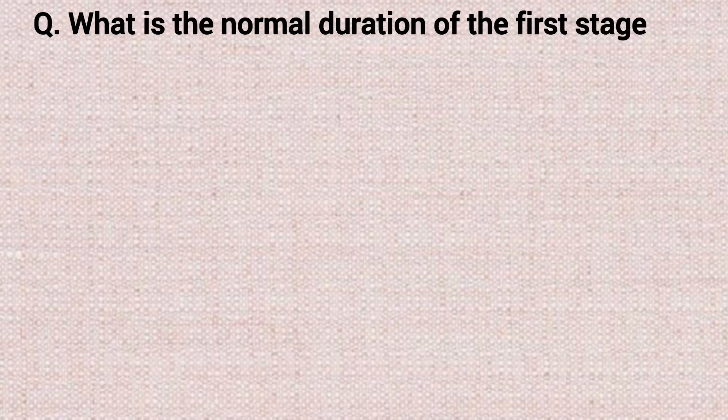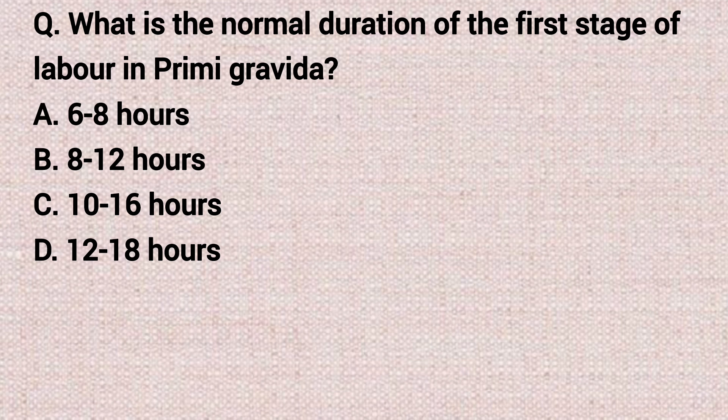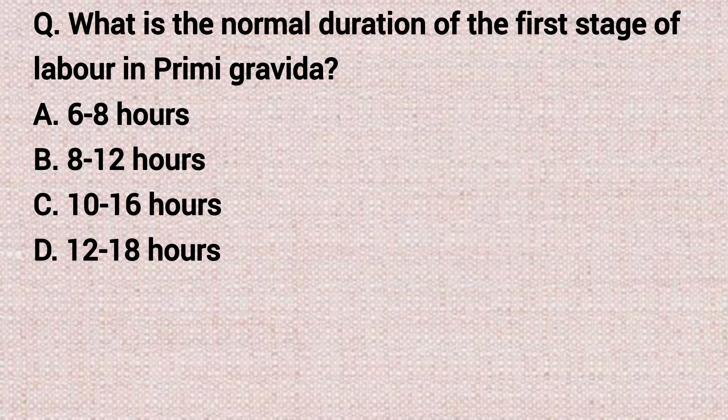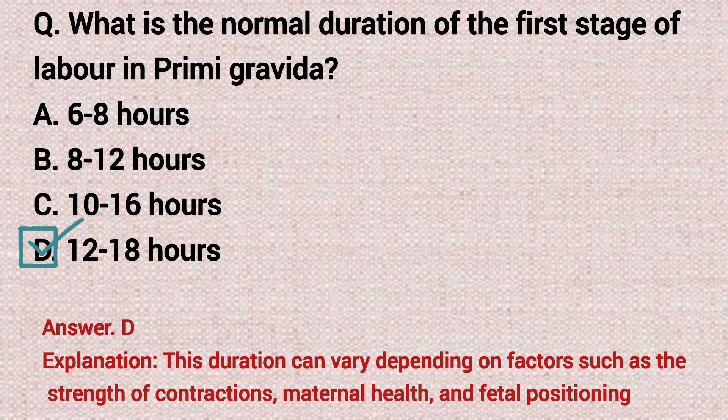The next question: what is the normal duration of the first stage of labor in primigravida? Option A: six to eight hours. Option B: eight to twelve hours. Option C: ten to sixteen hours. Option D: twelve to eighteen hours. The correct answer is option D, twelve to eighteen hours. According to the contractions, the duration will be changed.